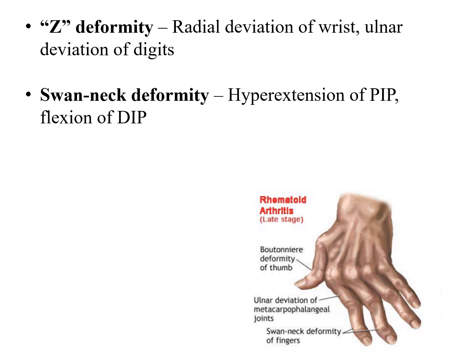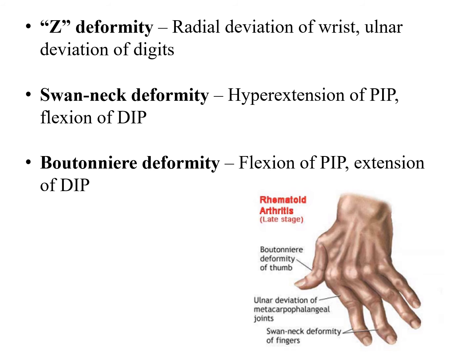We also have swan neck deformity, which consists of hyperextension of the proximal interphalangeal joint and flexion at the distal interphalangeal joint. The opposite is called boutonnière deformity, where there is flexion of the proximal interphalangeal joint and extension of the distal interphalangeal joint.